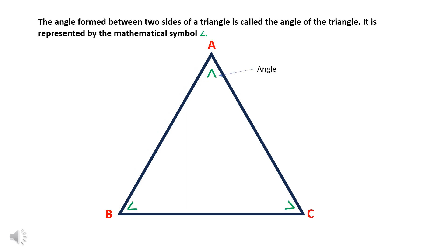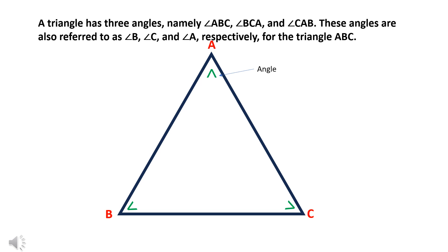The angle formed between two sides of a triangle is called the angle of the triangle. It is represented by a mathematical symbol. A triangle has three angles, namely angle ABC, angle BCA, and angle CAB. These angles are also referred to as angle B, angle C, and angle A, respectively, for triangle ABC.